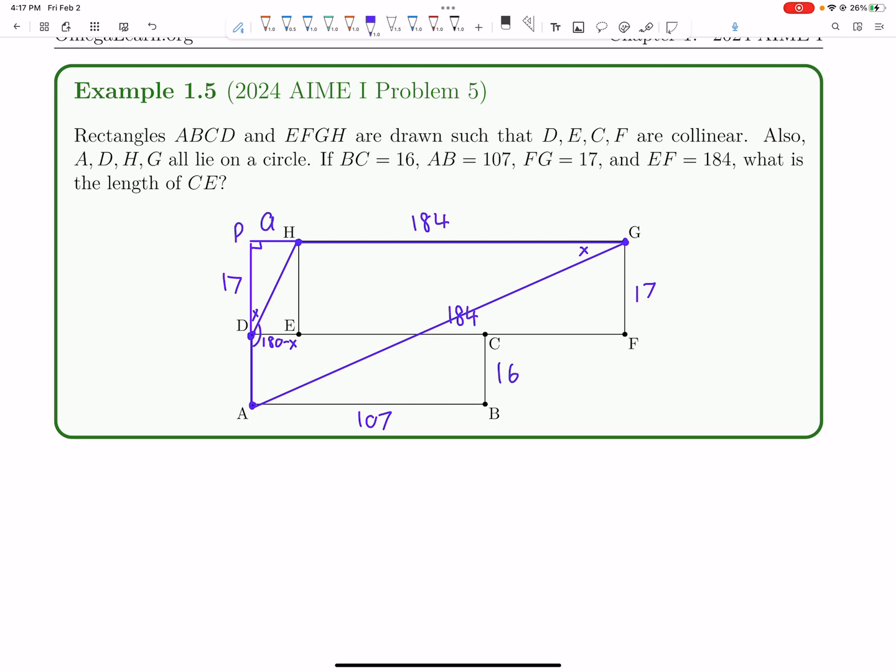Okay, and now PA, what's the length of PA? That's 33. So now we have 33 over 184 plus A equals A over 17.